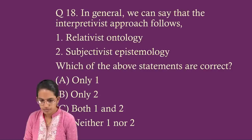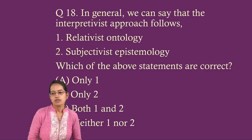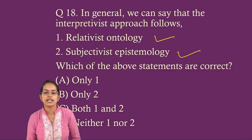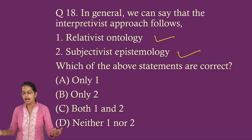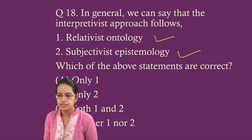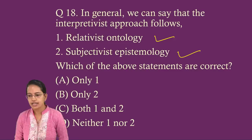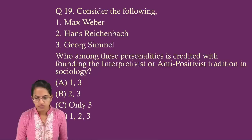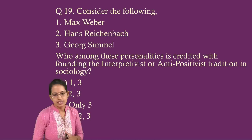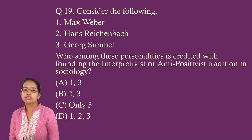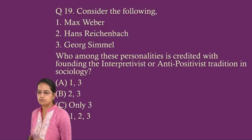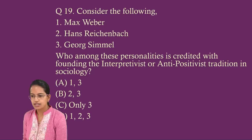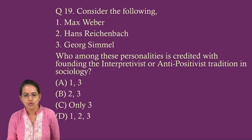Question 19: The interpretive approach follows which of these? Both are part of the interpretive approach: relativist ontology, which perceives reality as intersubjectivity, and subjective epistemology. Both of those are correct. Interpretivism is also called the anti-positivist approach. Which personality is credited with anti-positivism? Weber is one right answer, but besides Weber, George Simmel is also a right answer.